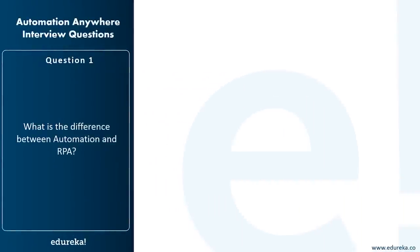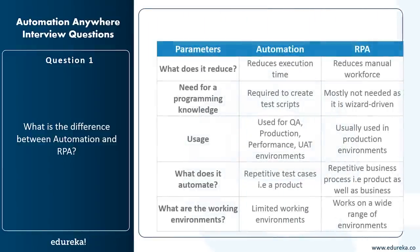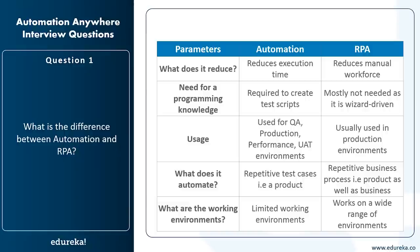The first question is: what is the difference between automation and RPA? You can differentiate them on various parameters: what does it reduce, need for programming knowledge, usage, what does it automate, and working environments. Automation reduces execution time, whereas RPA reduces the manual workforce. For automation, you do need programming knowledge to create test scripts, but for RPA you do not need programming knowledge as it's mostly wizard-driven. Automation is used for quality analysis, production performance, and user acceptance test environments, whereas RPA is mainly used in production environments.